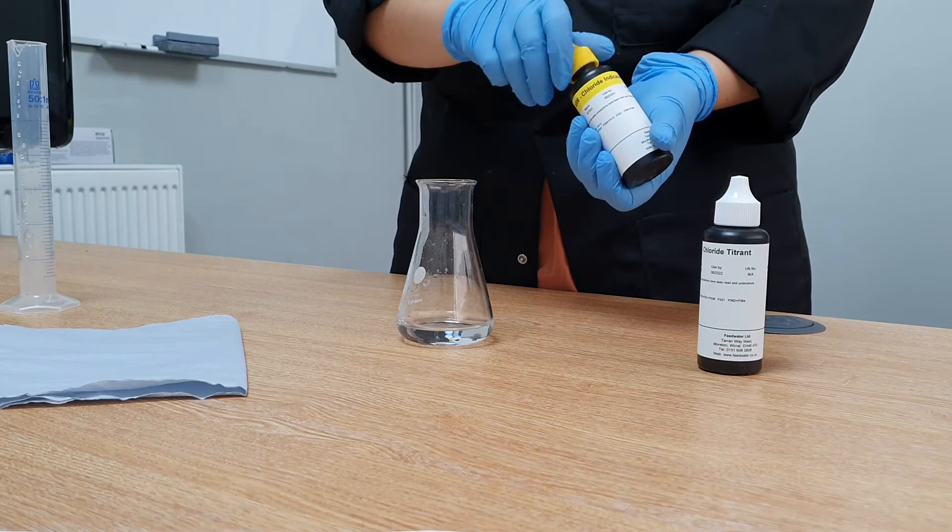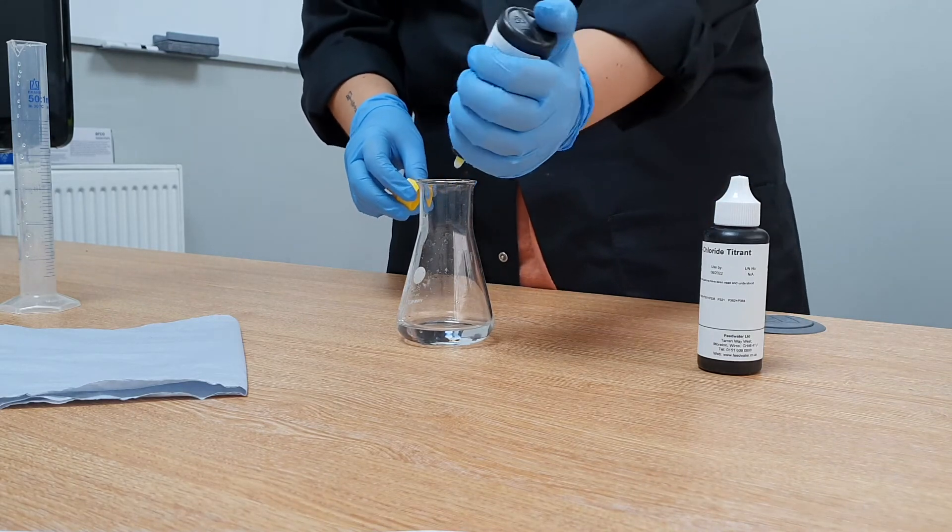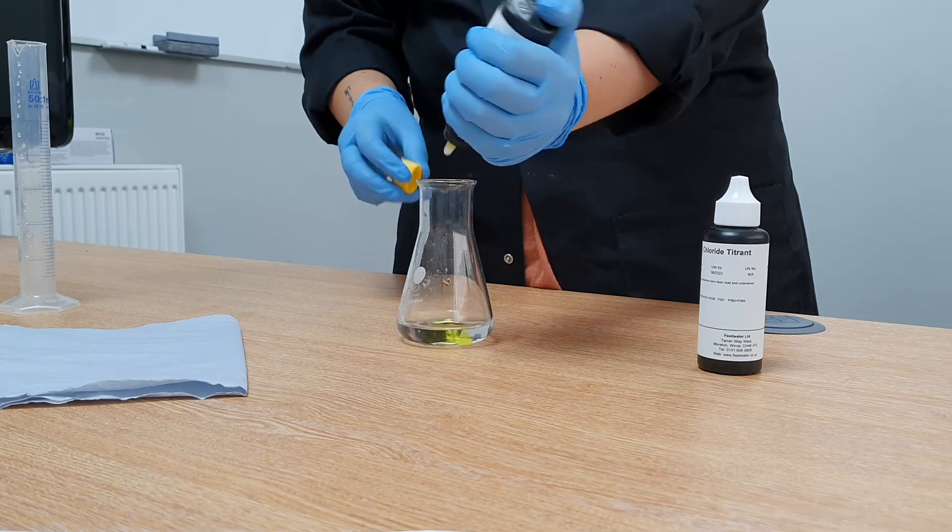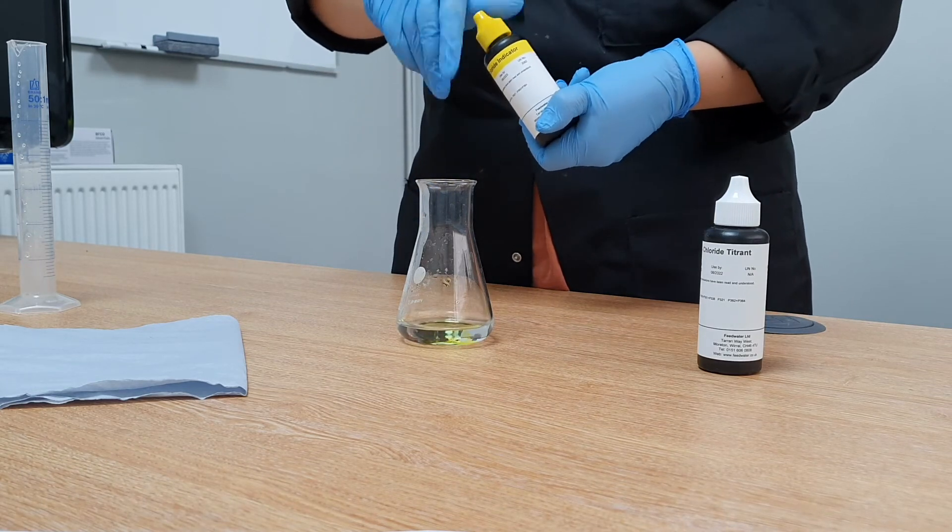Add 5 drops of chloride indicator solution to the sample and swirl to mix. The sample will turn yellow.